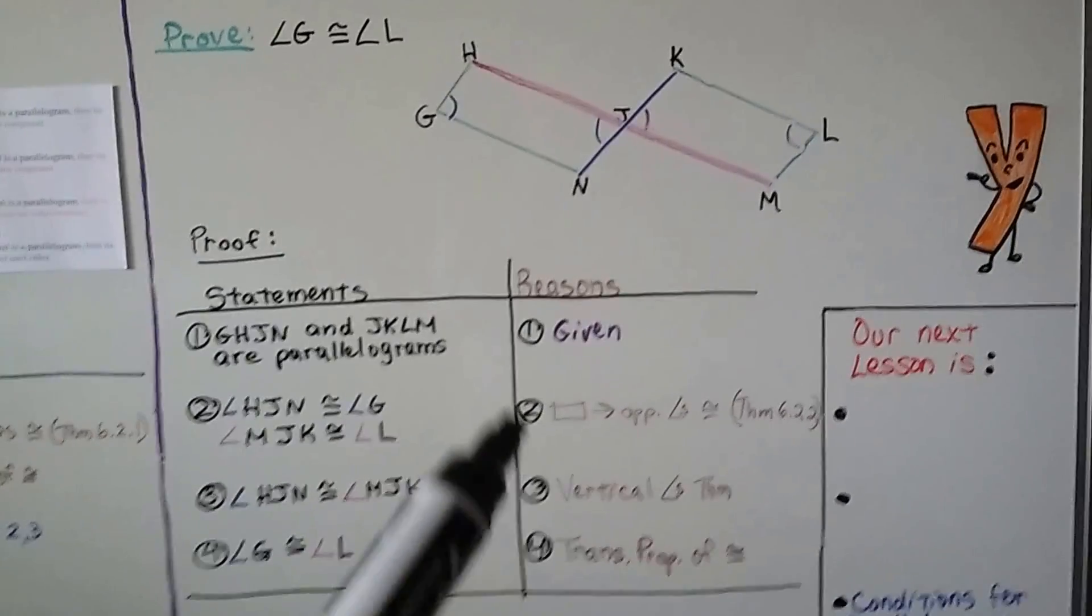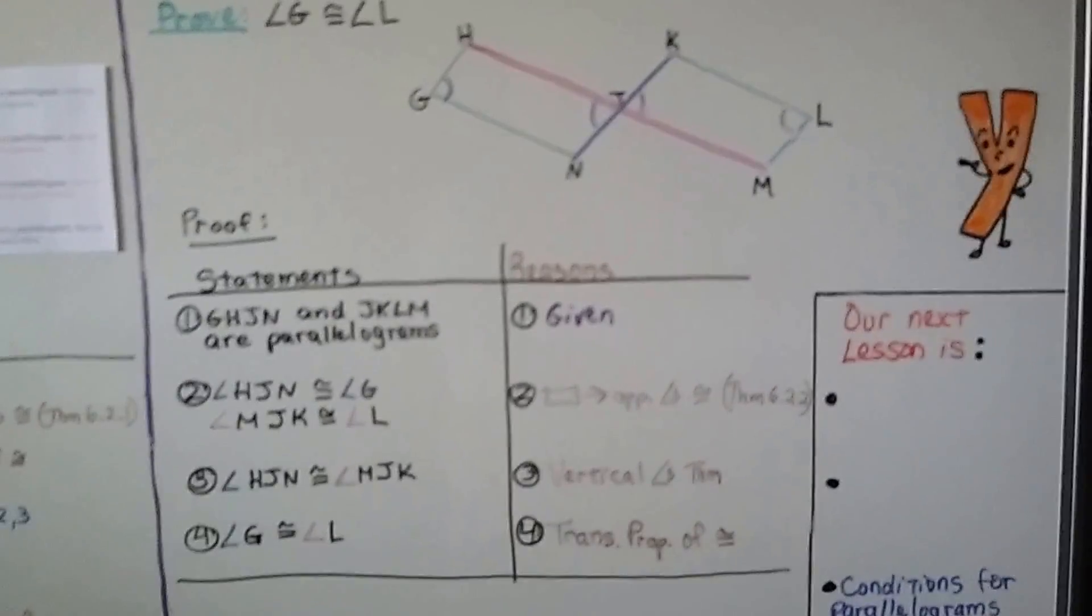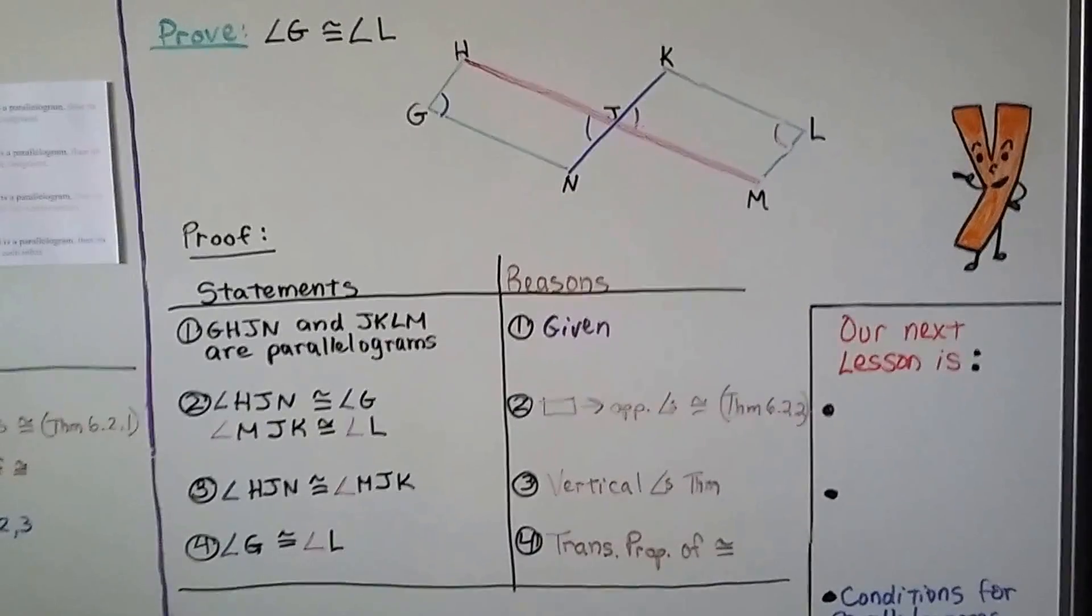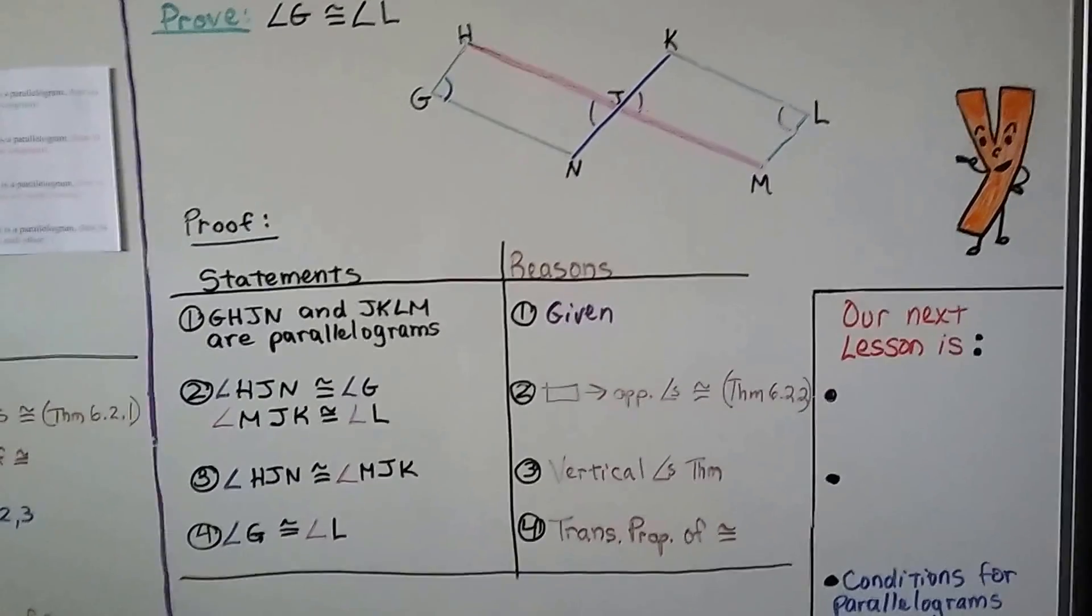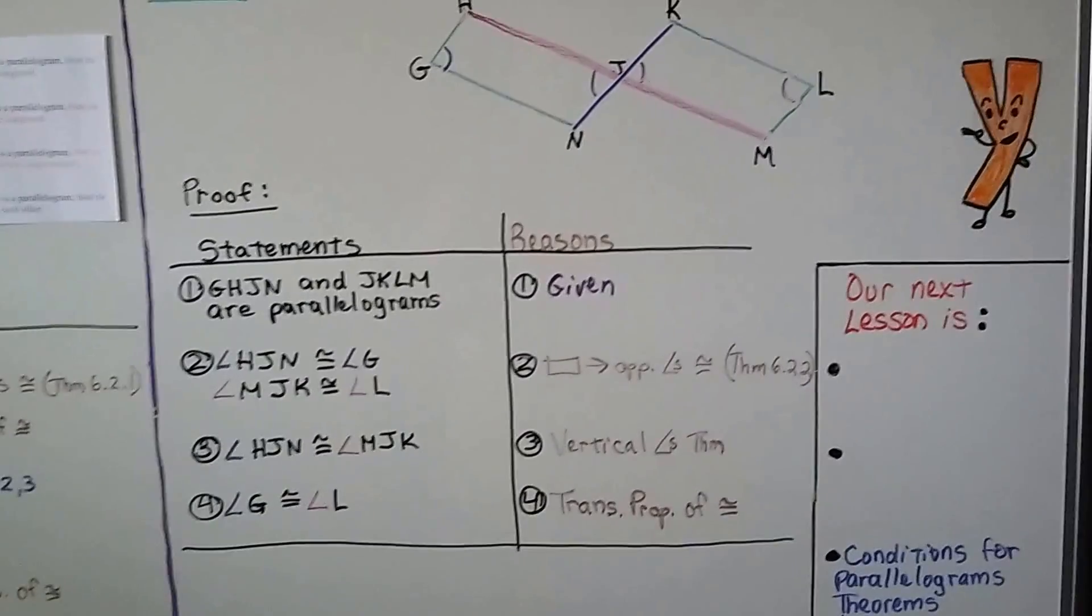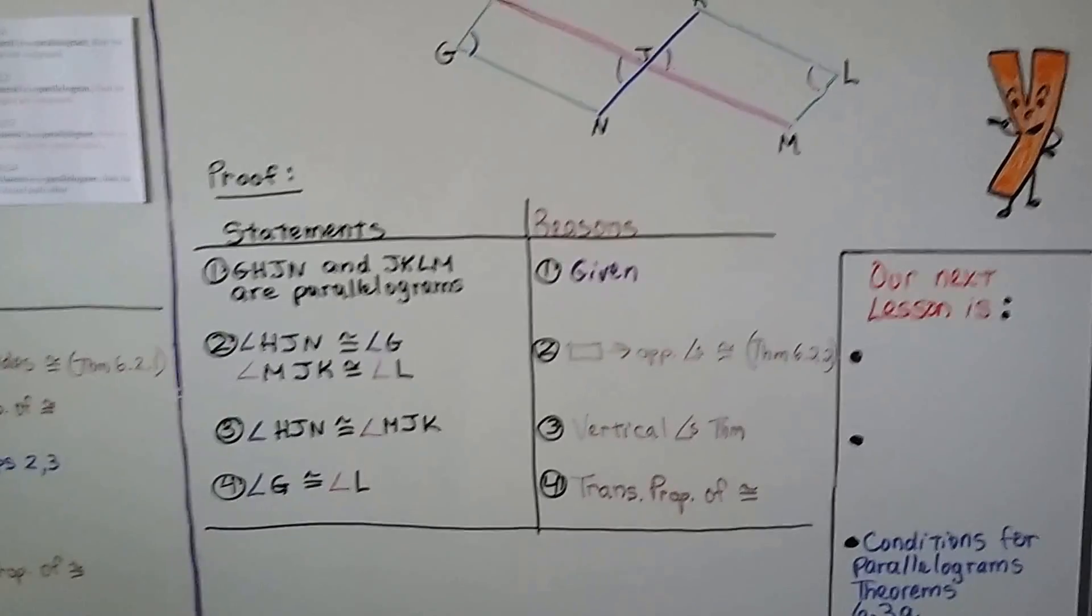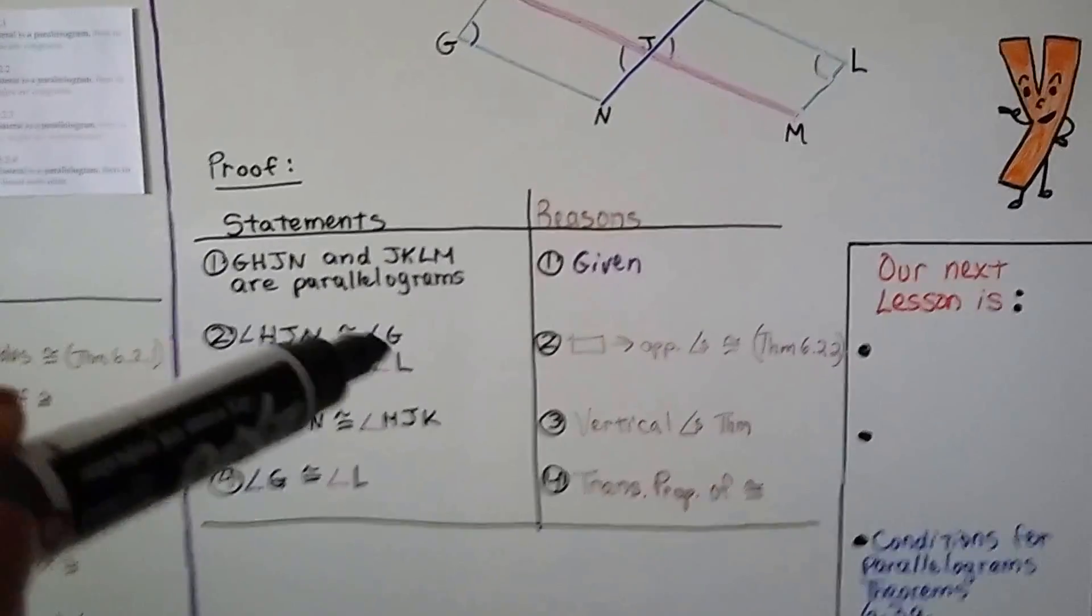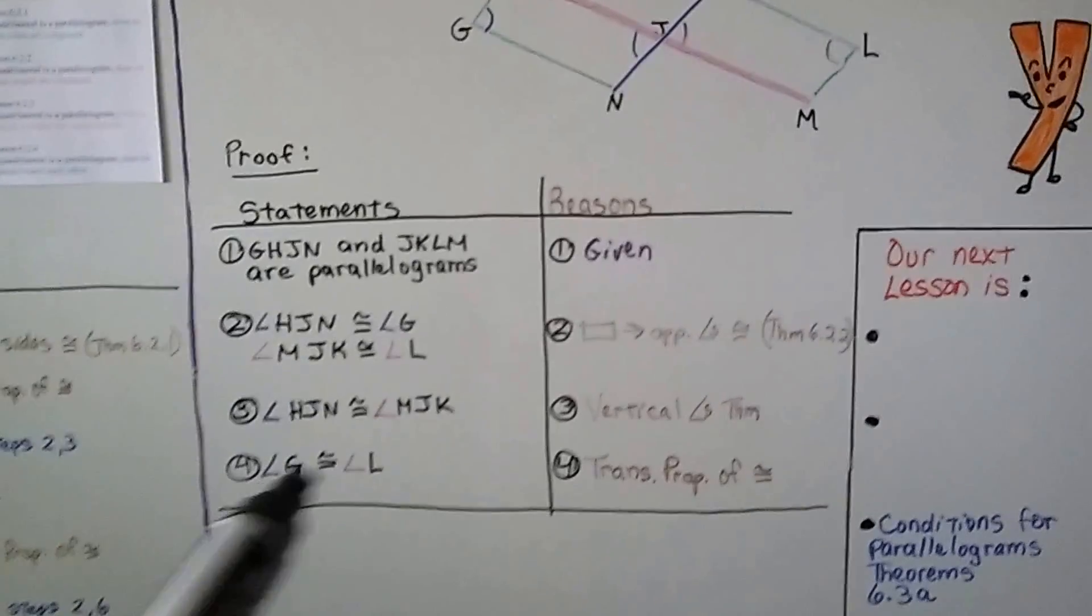Number 3 says angle HJN, this one right here, is congruent to MJK, this one right here. And that's from the vertical angles theorem. They're vertical angles, so they're congruent. Which brings us to number 4, that angle G is congruent to angle L because of the transitive property of congruence. And, remember, that transitive property says if A is equal to B and B is equal to C, well then A is equal to C. They're all equal to each other, right? And we had that this HJN was congruent to G, that MJK was congruent to L, and that these two were congruent to each other, which means these two are congruent to each other. See?